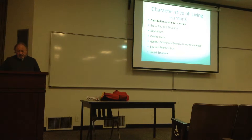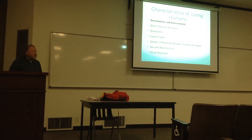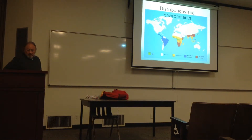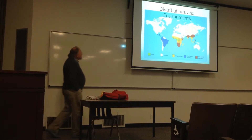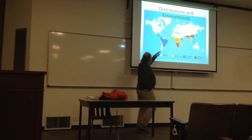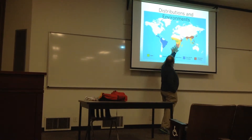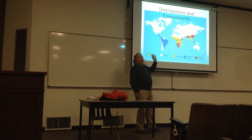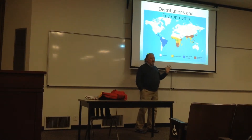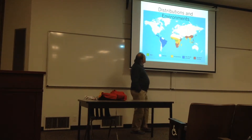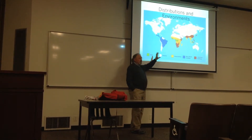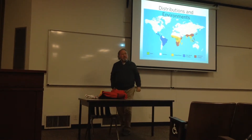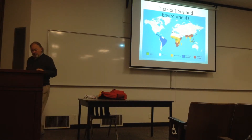Let's look first at the distributions and environments that humans are found in. This is a map showing where other primates are — here in the tropics. And this shows where humans are, which is just about everywhere. We have spread everywhere. We have spread above the tropics, into cool areas, drier areas, really cold areas. And that's one of our characteristics — we are found all over.